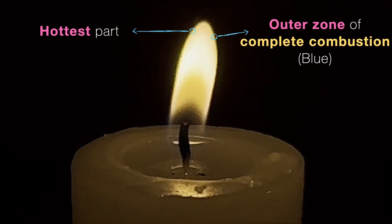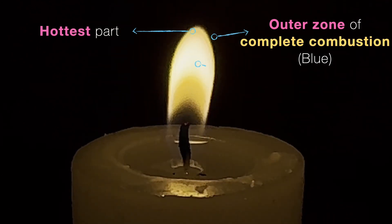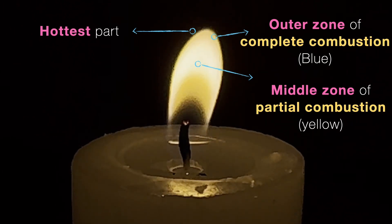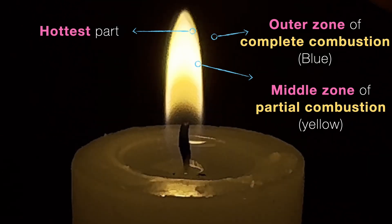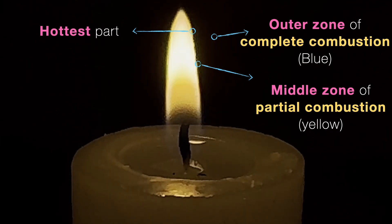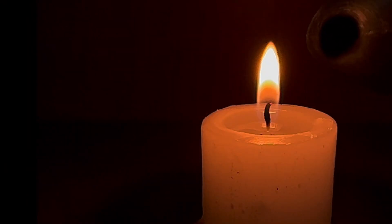Then comes the middle zone. This one is yellow and the brightest of the flame. It's called the luminous zone. Here incomplete combustion happens due to limited air supply. That's where the carbon particles are from. Remember when I placed the spoon in this middle zone, we saw black soot appear on it?